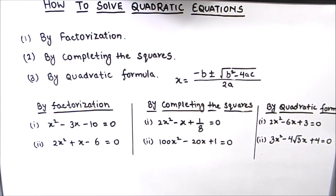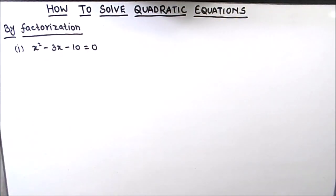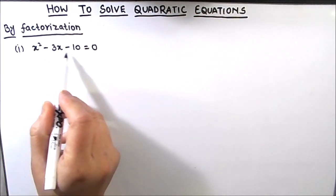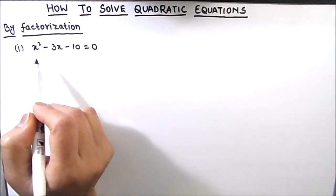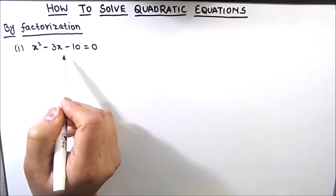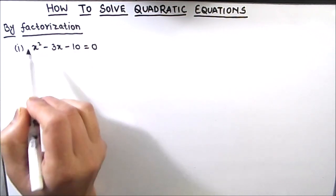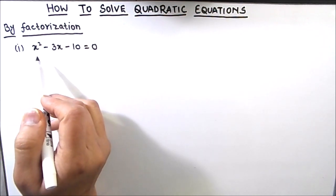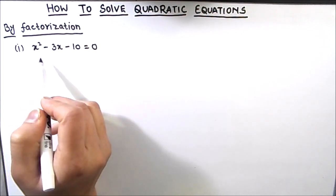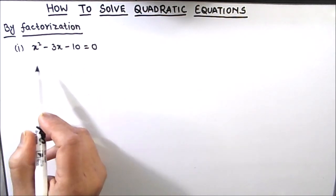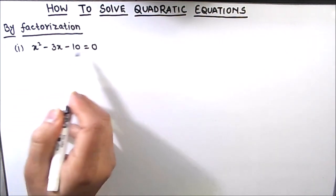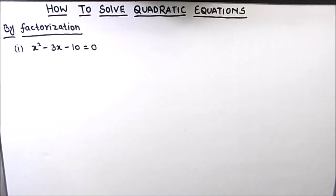Let's begin with our first method, which is solving the quadratic equation by factorization. Our first question is x squared minus 3x minus 10 is equal to 0, and we need to find the roots of this quadratic equation. Roots means the two solutions of this equation. Most of the time a quadratic equation will have two solutions, though there are special cases when it will have no solution or a single solution. We are going to solve this equation by factorization, using factors to find the roots.